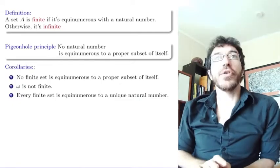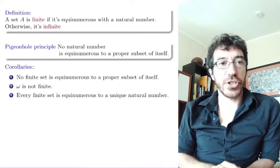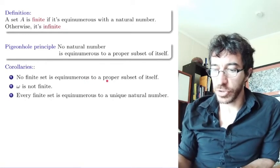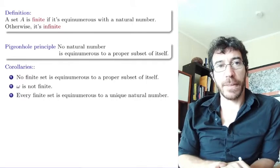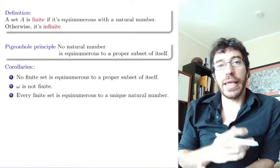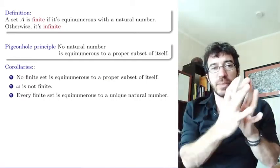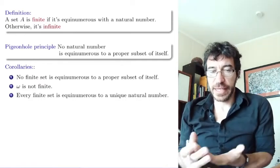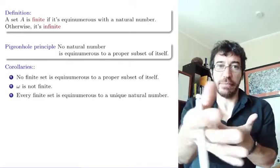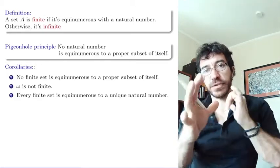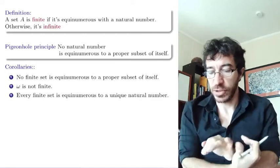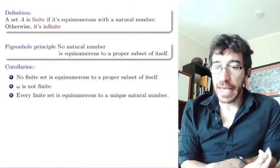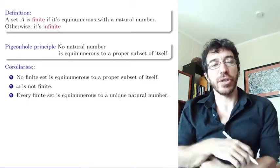There are a few corollaries of the pigeonhole principle. The first is that no finite set is equinumerous to a proper subset of itself. This is because every finite set is equinumerous to a natural number, so if that were true for a finite set, it would also be true for that natural number — which we know is false. So finite sets behave like natural numbers with respect to bijections.